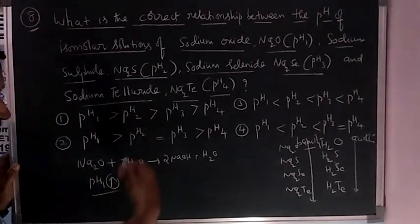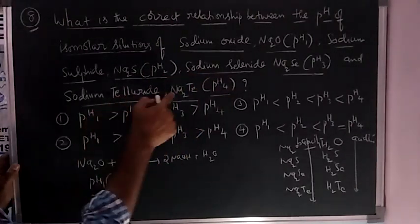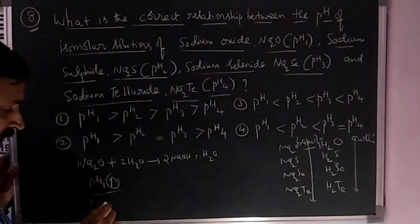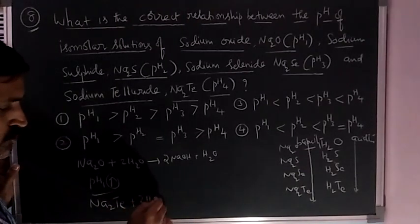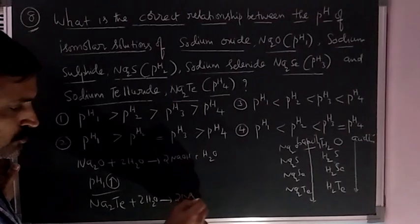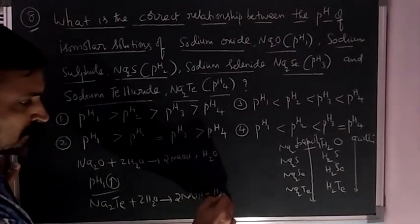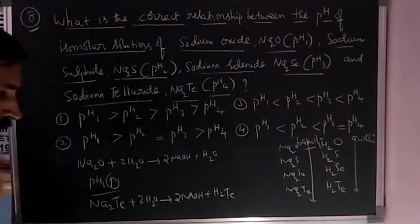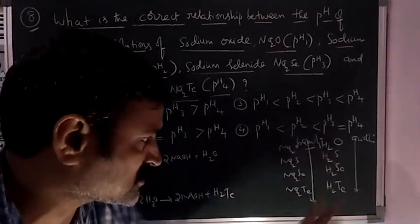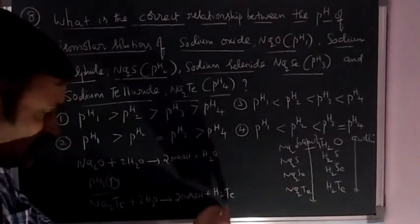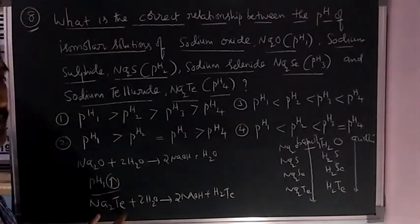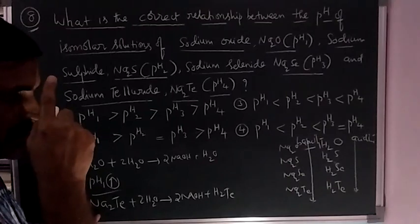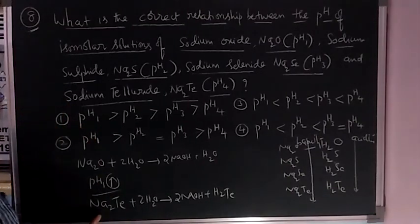If you take the last one, sodium telluride, the equation is: Na2Te plus 2H2O gives 2NaOH plus H2Te. What is H2Te according to this order? It's a strong acid, which means Na2Te is a weak base.